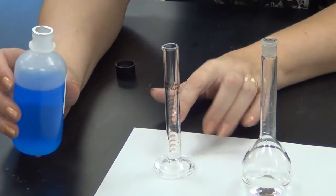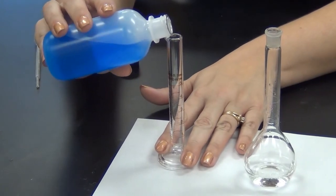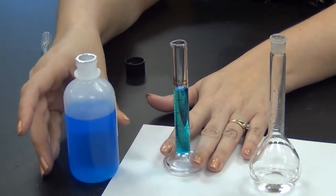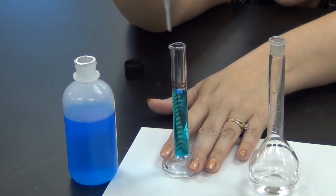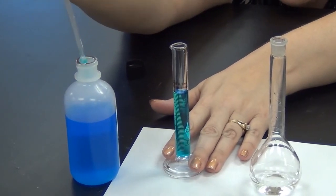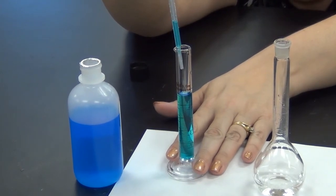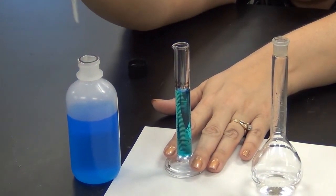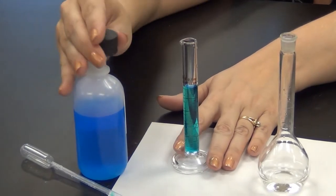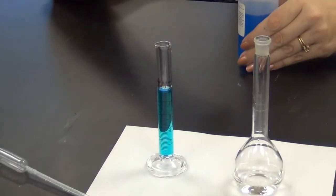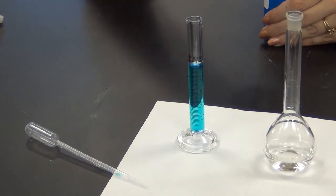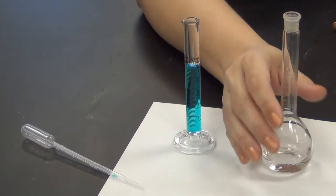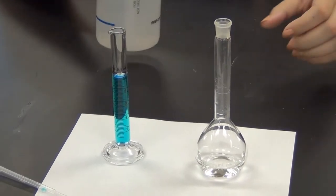I'm going to get close to the top here. Then I'm going to get down at eye level and make sure that I am right where I need to be. It looks like I maybe just need a drop or two more so the meniscus is above the line. So now I have 5 milliliters of my dark blue concentrated solution. I'm going to dilute that with distilled water to get 50 milliliters total. That's why I have a 50 milliliter volumetric flask here.